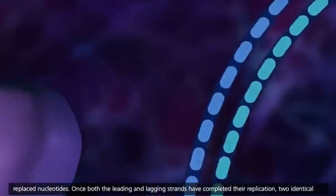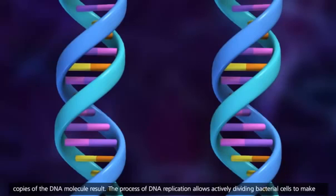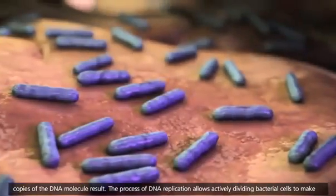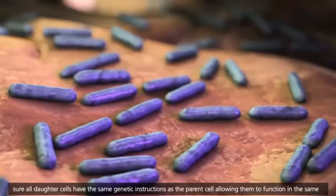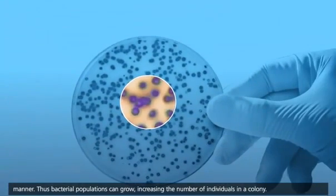Once both the leading and lagging strands have completed their replication, two identical copies of the DNA molecule result. The process of DNA replication allows actively dividing bacterial cells to make sure all daughter cells have the same genetic instructions as the parent cell, allowing them to function in the same manner. Thus, bacterial populations can grow, increasing the number of individuals in a colony.